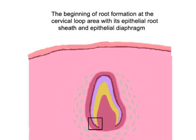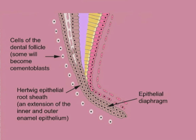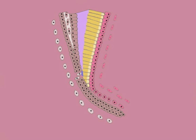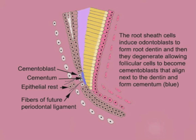The boxed area is magnified to show the root sheath and the process of root formation. This is the cervical loop area with the Hertwig root sheath and its extended diaphragm that will outline root formation. The epithelial sheath cells induce odontoblasts to produce root dentin and then disintegrate, allowing dental sac cells to differentiate into cementoblasts that produce cementum. Some sheath cells may persist in the periodontal zone as epithelial rests of Malassez.